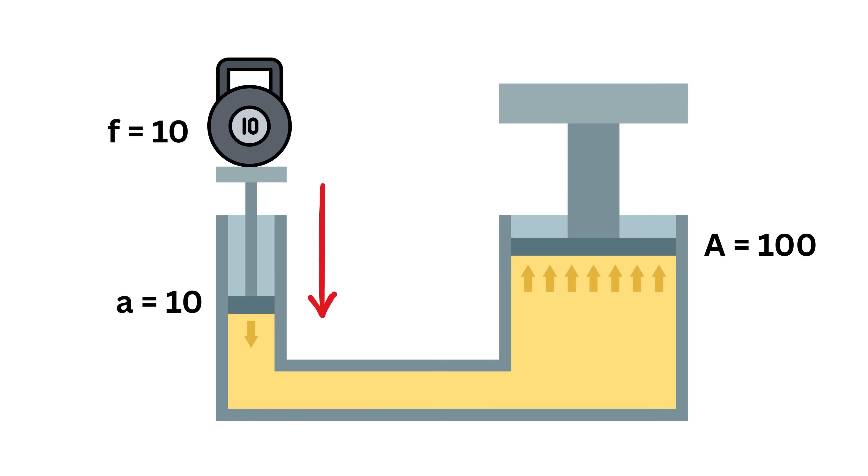This force creates a pressure inside the confined fluid whose value will be 10 over 10 or 1 unit. According to Pascal's law, this same pressure is transmitted equally to every part of the fluid and reaches the large piston without any reduction.